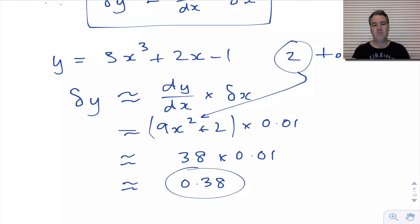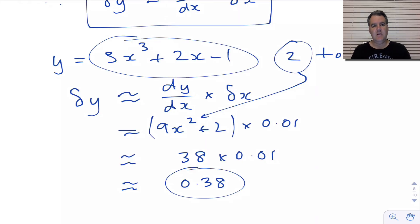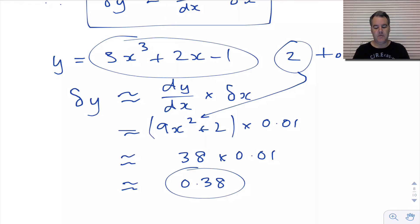So we get 0.38. The approximate change in y here is 0.38. So if you knew what the y value was at x equals 2, which you could easily find by substituting it in, you could then work out what the approximate y value was — it's just 0.38 more in this case. There's your first example.